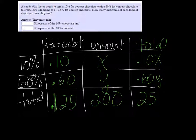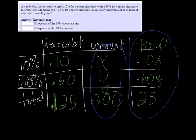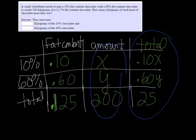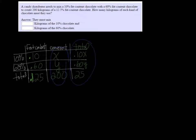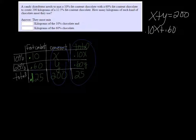These two columns, the amount column and this total column, give us our two equations. So we get x plus y equals 200, and we get 0.10x plus 0.60y equals 25.